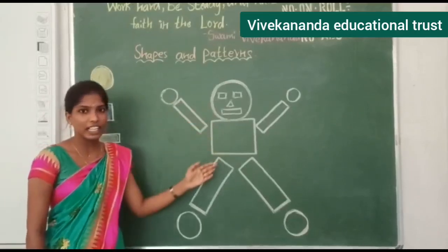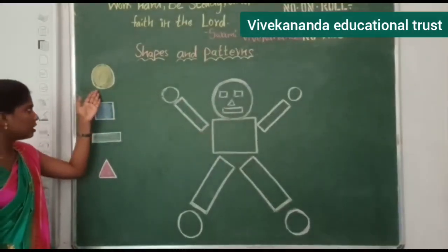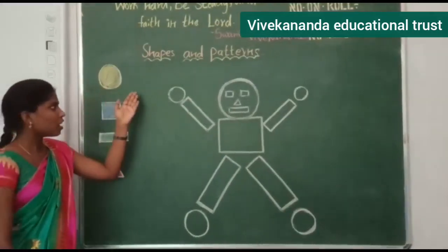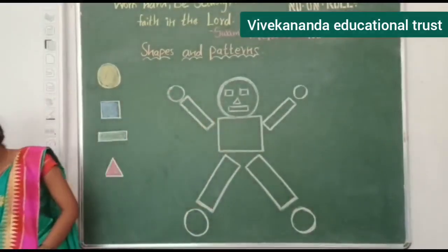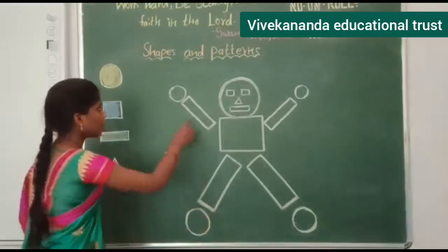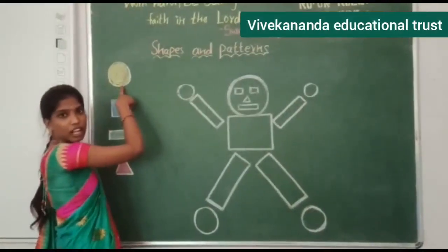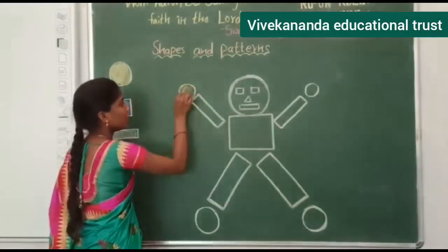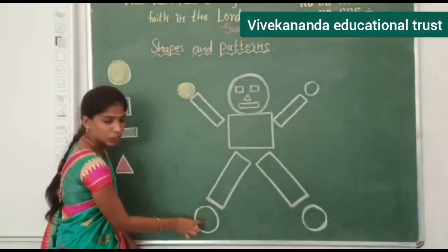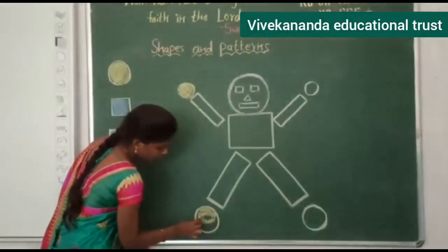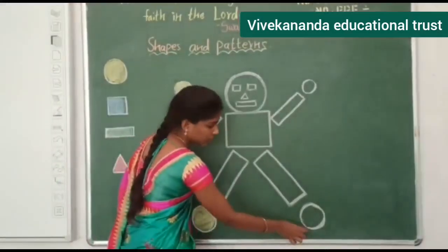Now we are going to colour this Robo. What shape is this? Circle. We have to give yellow colour to circles. What shape is this? Circle. For circle, what colour do we have to give? Yellow. So give yellow colour to circles. And here is another circle — give yellow colour.